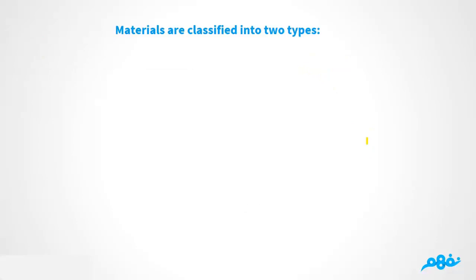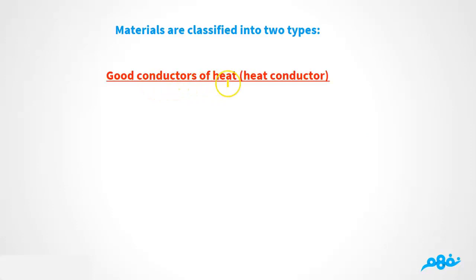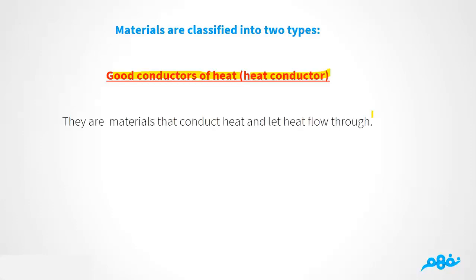Now, we have two types of materials. Number one: good conductors of heat — you can simply call them heat conductors. Good conductors of heat are materials that conduct heat and let heat flow through them.